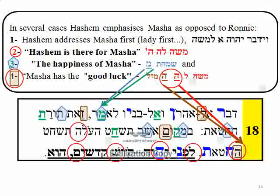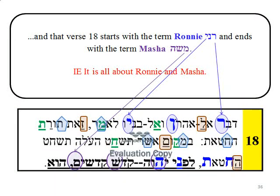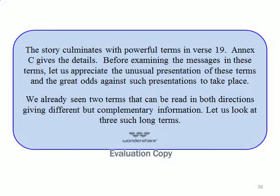Hashem addresses Masha first — lady first. Hashem is therefore for Masha. The happiness of Masha. Masha has the good luck. Note how the terms 'Take Masha for a wife,' 'the good luck,' and 'their happiness' are all interwoven between the two terms Roni and her groom. Verse 18 starts with the term Roni and ends with the term Masha — it is all about Roni and Masha. The good luck is dependent on a holy matrimony: before Hashem, holy of the holy he is. The story culminates with powerful terms in verse 19. Annex C gives the details.